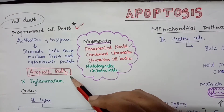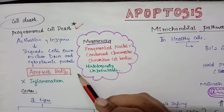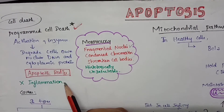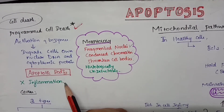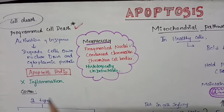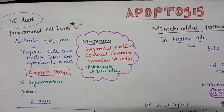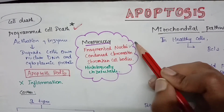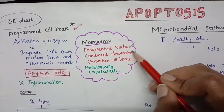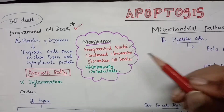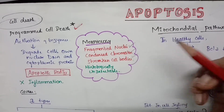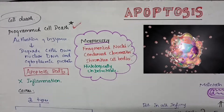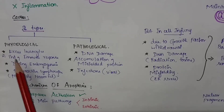There will be apoptotic bodies, which are the characteristic features of apoptosis. Note that there is no inflammation in apoptosis, but in necrosis there will be inflammation. Going into the morphology, there will be fragmented nuclei, condensed chromatin, and shrunken cell bodies, but these are not histologically detectable on H&E stain.